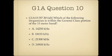Question 10. Which of the following frequencies is within the general class portion of the 15 meter band? A. 14,250 kilohertz. B. 18,155 kilohertz. C. 21,300 kilohertz. Or D. 24,900 kilohertz.